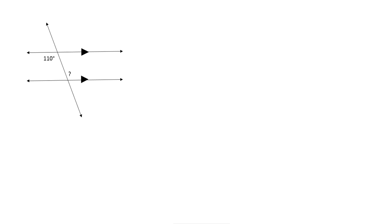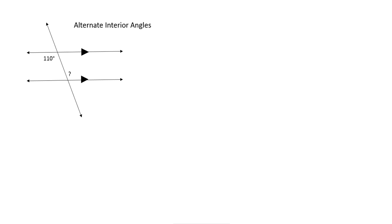So let's do some examples. Pictured here, I have 2 angles that are on the opposite side of the transversal and they are on the inside of the parallel lines, so these would be alternate interior angles. Recall that alternate interior angles are equal. So if this angle is 110 degrees, then the question mark will also be 110 degrees.